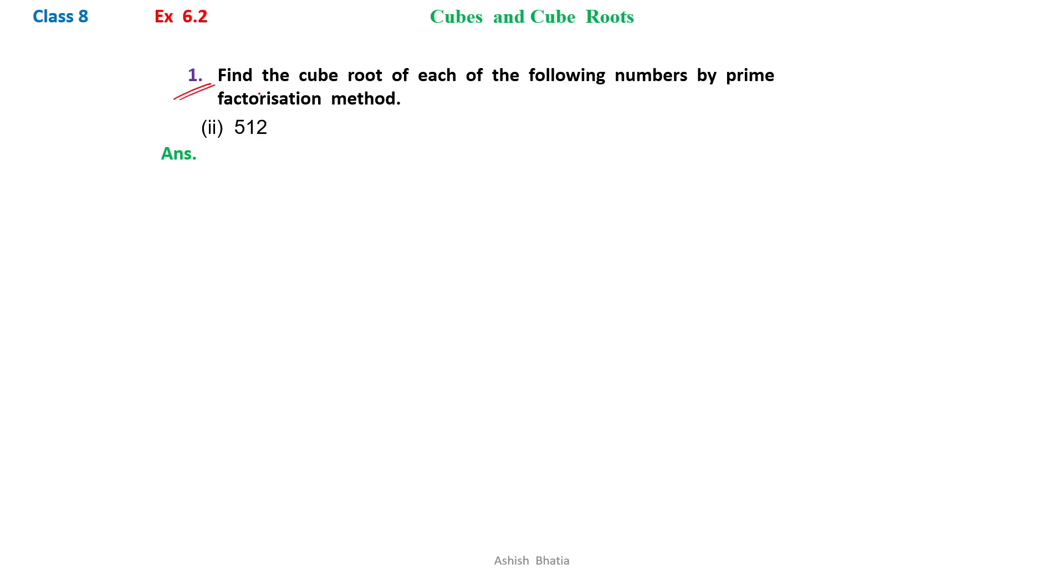Exercise 6.2, question number 1: find the cube root of each of the following numbers by prime factorization method. Here we need to find out the cube root of 512.